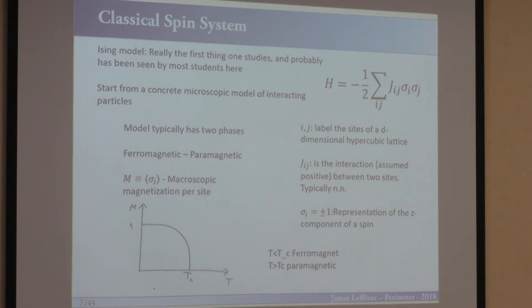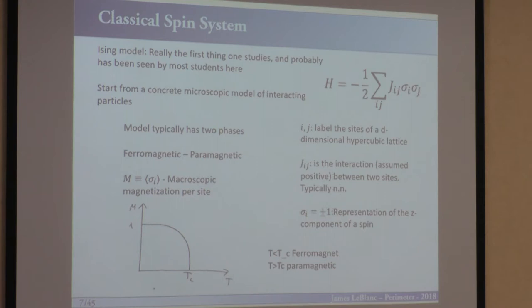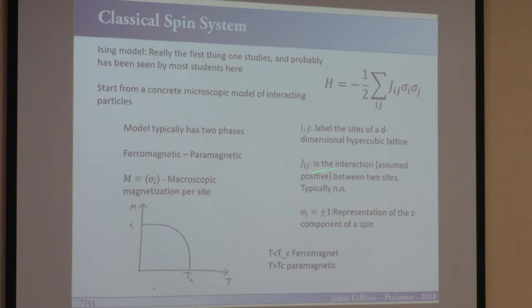The Ising model: we take a series of spins with Z2 symmetry — the spin is either up or down, a classical spin. The reason the Ising model is used in all courses on phase transitions is to start with a concrete microscopic model of interacting particles that actually has phase transitions. The model typically has a ferromagnetic phase where all spins are aligned, a paramagnetic phase where they're random, and you can also contrive antiferromagnetic phases. In the Hamiltonian, ij labels sites, J_ij is the interaction between sites i and j, and sigma_i and sigma_j are ±1 to represent those spins.